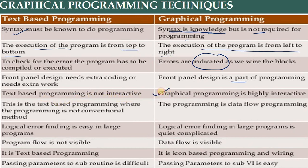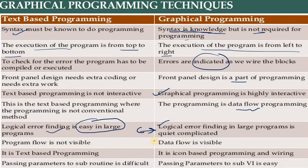Text-based programming is not interactive, whereas graphical programming is interactive. Graphical programming is not a conventional method — it is data-flow based. Logic error finding in large problems is quite complicated in text-based programming, but logical error finding is easy in graphical programming. The program does not run line by line here. Program flow is not visible in text-based, but data flow is visible in graphical. It is icon-based programming, and passing parameters to subroutines is easy.